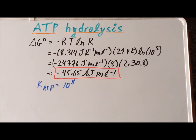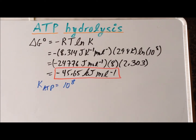The fact that the equilibrium constant for the hydrolysis of ATP has a value of 10 to the 8 may seem of only academic interest and not terribly relevant to understanding reactions in a biochemical system — but we'll see that that is not true. ATP has another role which may be even more important than simply being a source of energy.